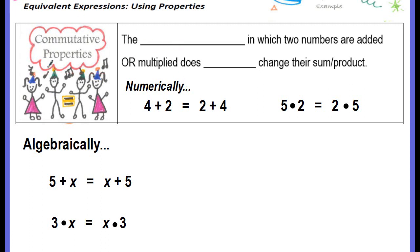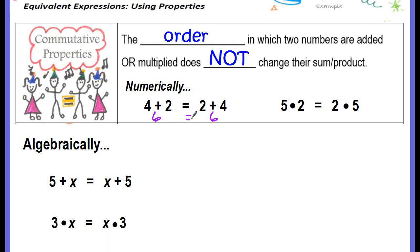The first property we're going to talk about is the commutative property — not commune, there's no N — commutative property. It says that the order in which two numbers are added or multiplied does not change their sum or product. If we're adding 4 plus 2, this property says we can change the order and write it as 2 plus 4, and the answer is going to be the same. 4 plus 2 is 6, and 2 plus 4 is 6. The same is true for multiplication: 5 times 2 can be rewritten as 2 times 5, and both equal 10, so the product did not change.